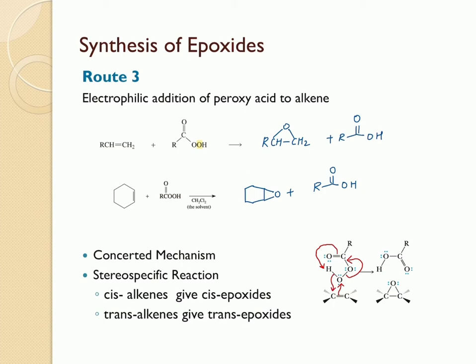The mechanism for the addition of oxygen to the double bond to form the epoxide is analogous to the formation of a cyclic halonium ion intermediate in the electrophilic addition of halogens to alkenes. This reaction is stereospecific, which means cis-alkenes give only cis epoxides and trans-alkenes give only trans epoxides.